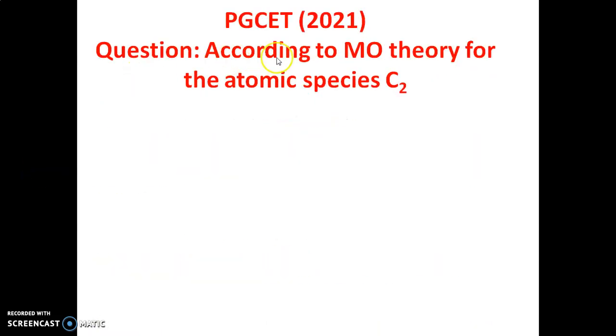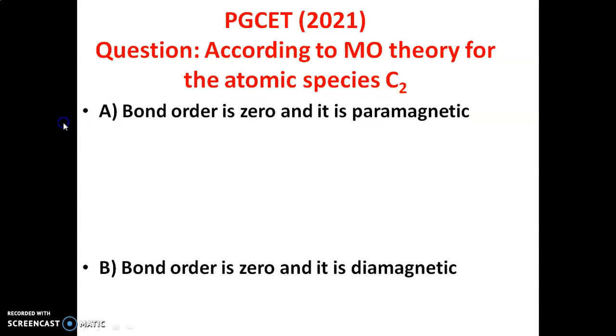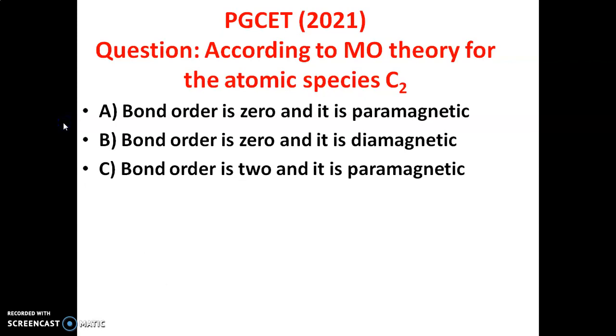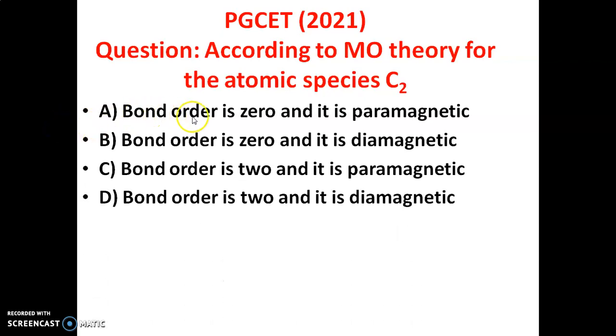Namaskara. This is a PGCET 2021 question. According to MO theory — molecular orbital theory — for the atomic species C₂, there are 4 options: Option A: bond order is 0 and it is paramagnetic. Option B: bond order is 0 and it is diamagnetic. Option C: bond order is 2 and it is paramagnetic. Option D: bond order is 2 and it is diamagnetic.